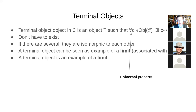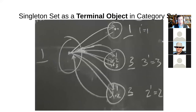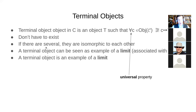A terminal object can be seen as an example of something called a limit, which is a very important concept in category theory that comes up again and again. In Set, the terminal object is a singleton set. What is the set such that for any other set there exists exactly one function from that other set to this terminal set?